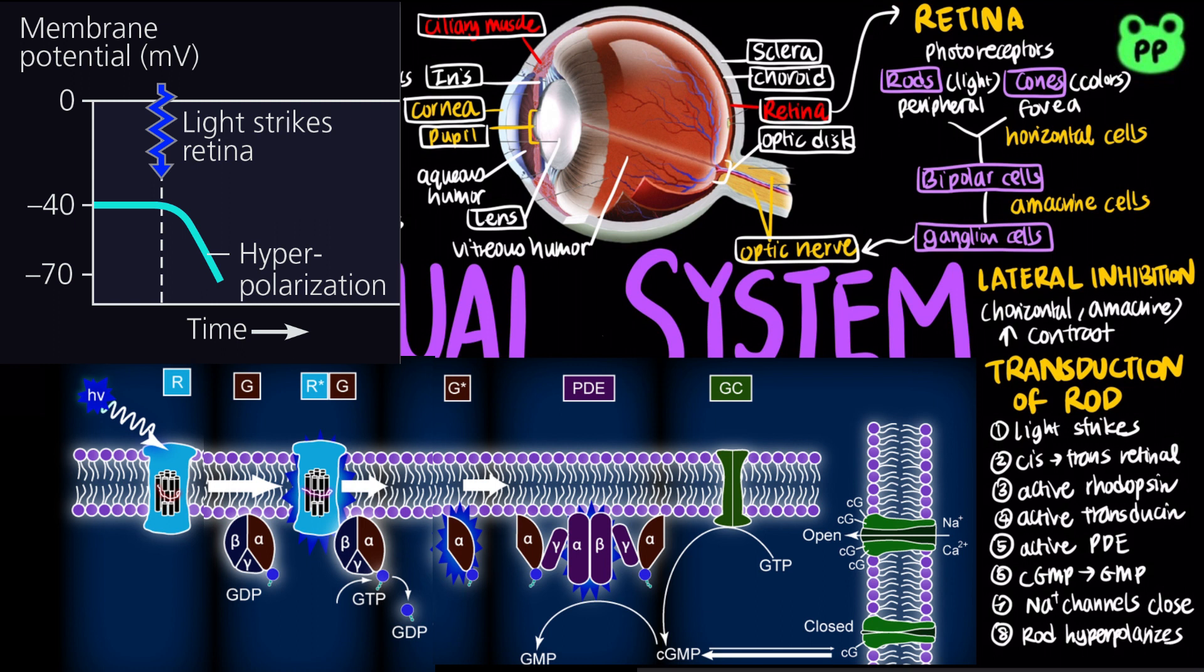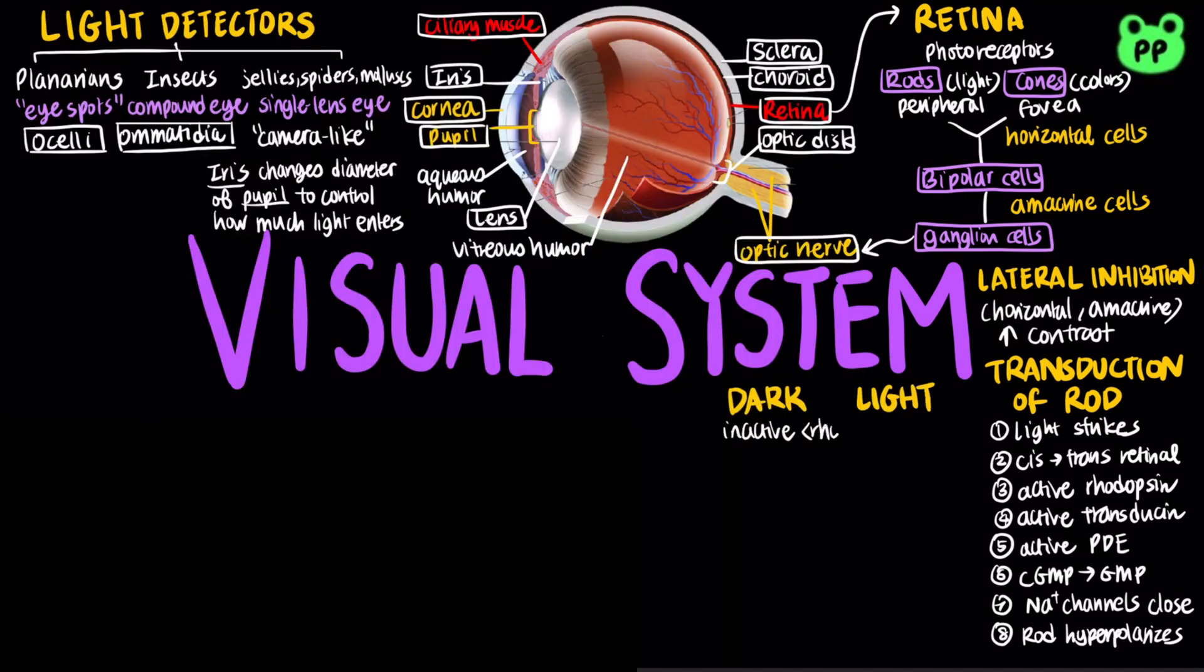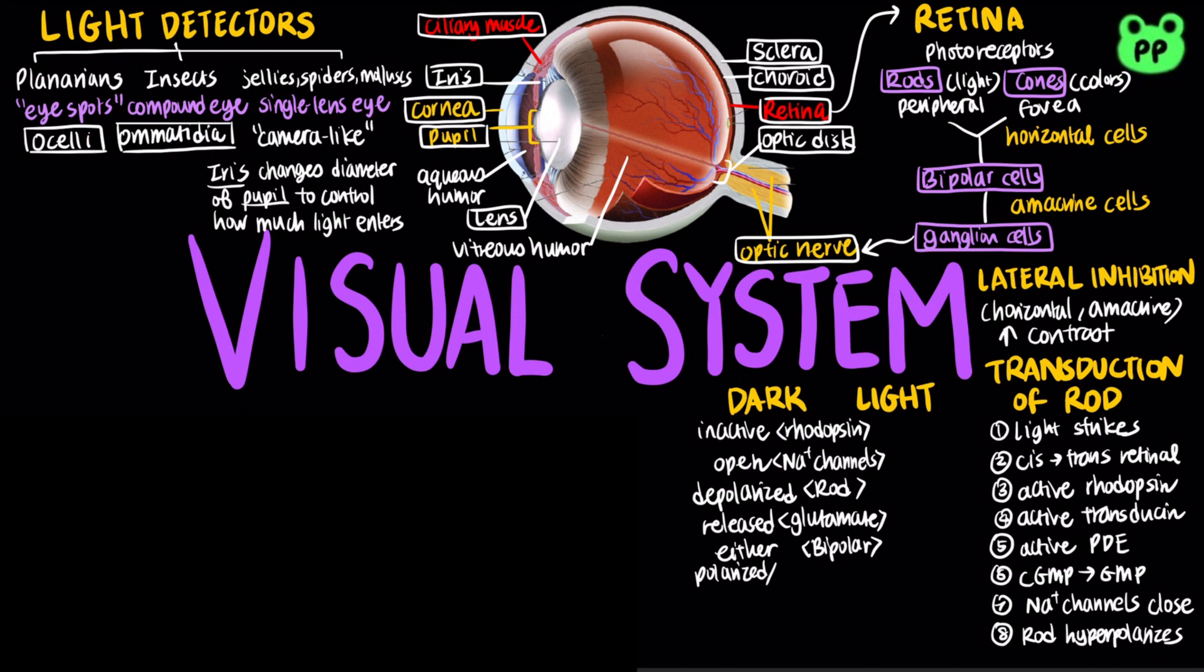The rod cell hyperpolarizes. Notice that this is opposite of neurons, which depolarize in response to action potential. In the dark, rhodopsin is inactive and sodium channels are open. The rods are depolarized, which releases glutamate to the bipolar cell. The bipolar cell will either depolarize or hyperpolarize depending on the glutamate receptors.